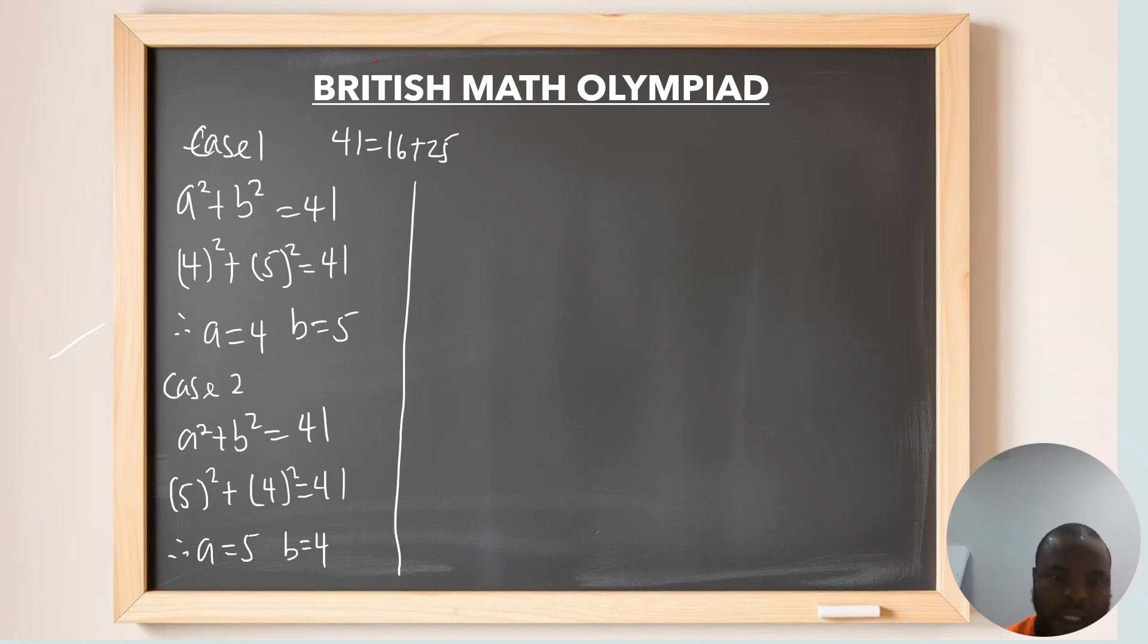Recall that in the previous slide, we have that our x equals to 7a. So, in case 1, our x is going to be 7 times 4. That shows x is 28. Also, in the same case, we have y to be equal to 7b. So, in case 1, y is going to be 7 times 5, which is 35. This is the case for case 1. So, in case 1, x is 28 and y is 35.